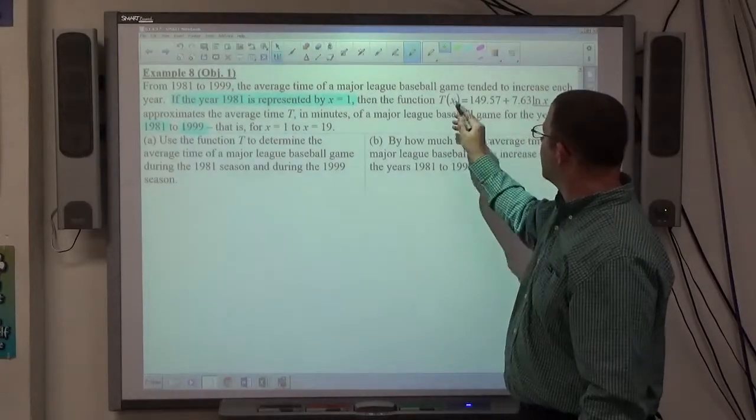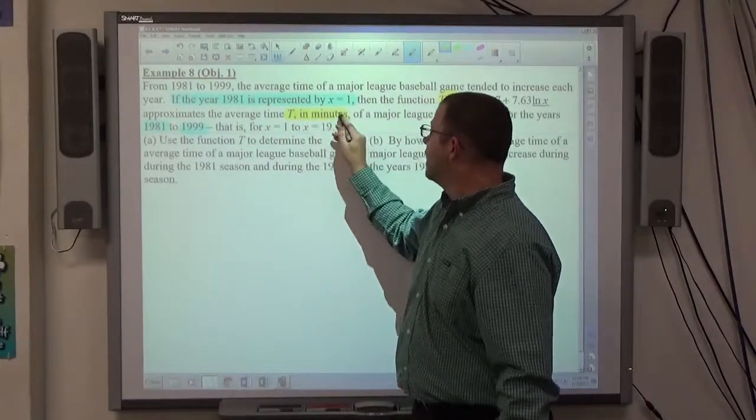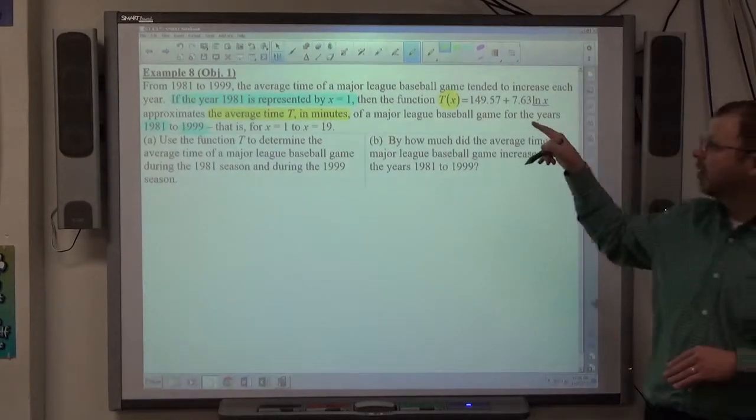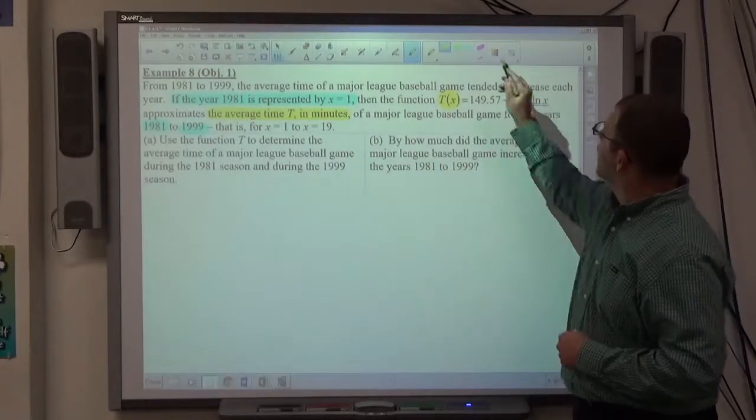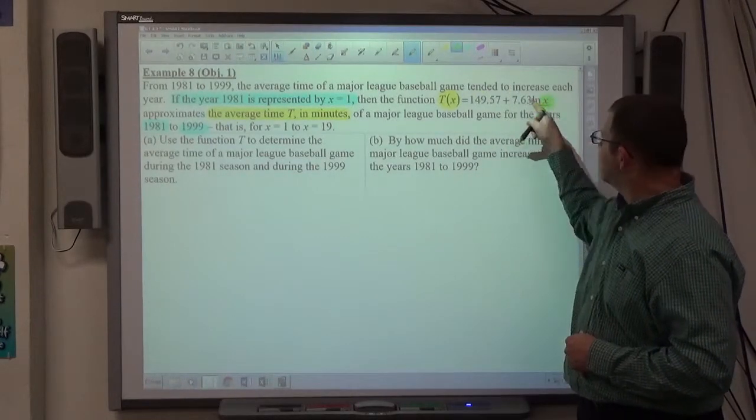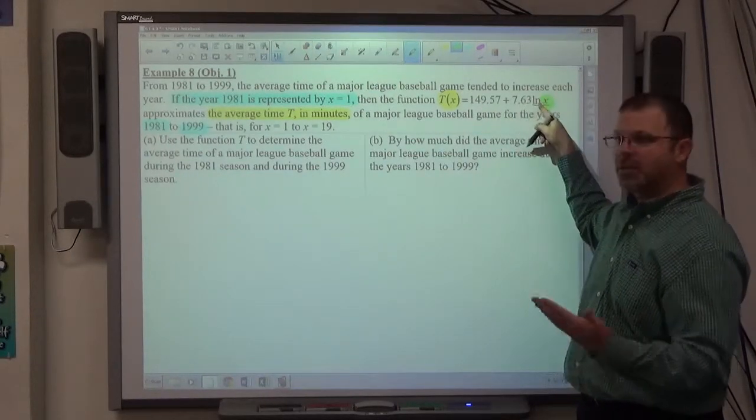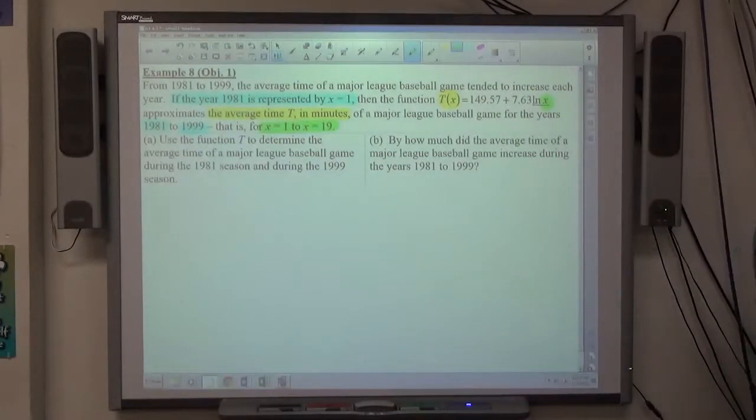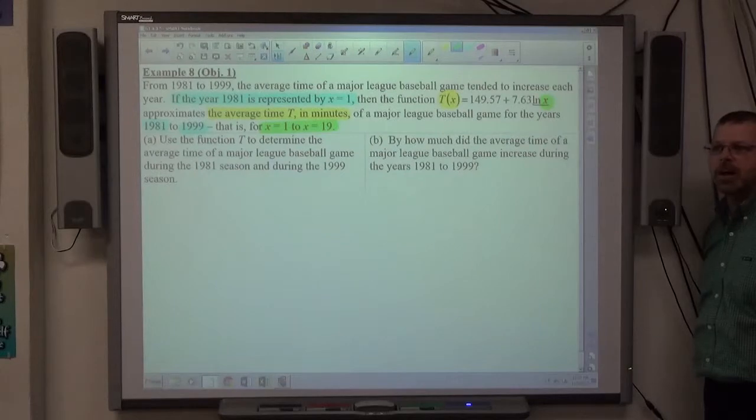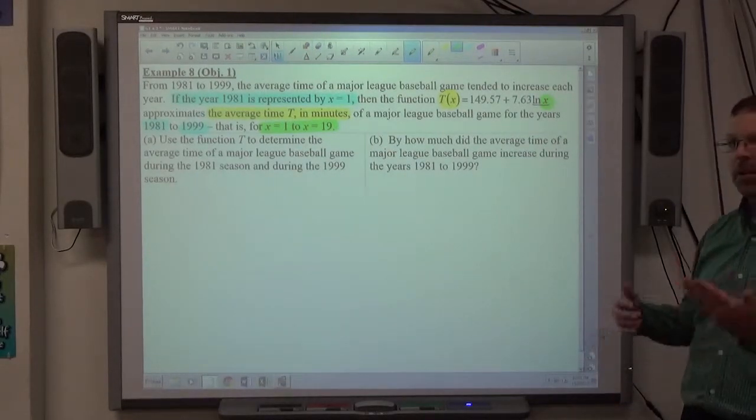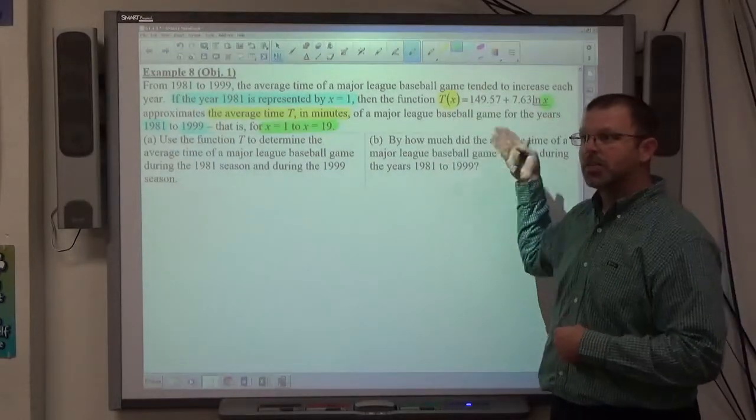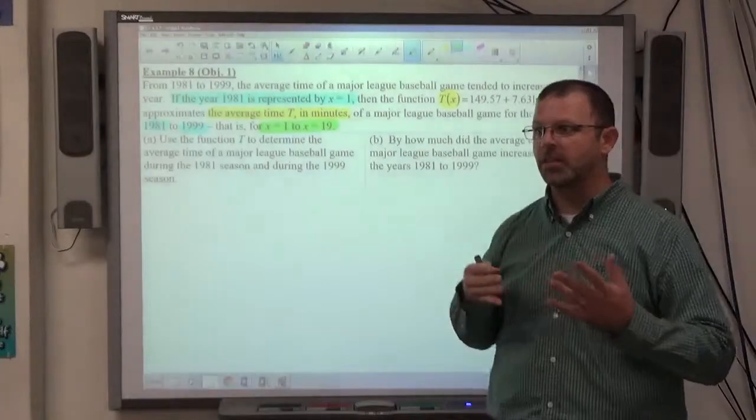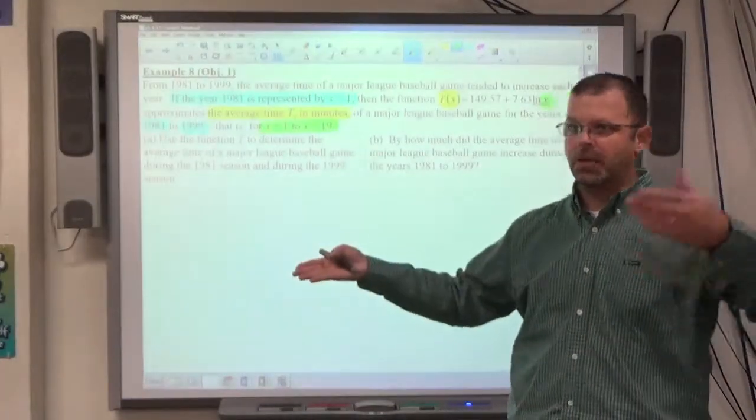The other thing we have to consider is the equation. We have t(x). t(x) is t. t is the average time of game in minutes. They're giving us an equation. We need to understand what these variables in the equation represent. The variable t(x), which is t, is the average time in minutes. It says ln x. 149.57 is a number, 7.63 is a number, ln is a log function, x is a variable. x is the year. And the year's domain is 1 to 19. So this function's only valid for years 1981 to 1999. If they're asking me for the time, they should give me the year. I substitute the year in based on what number that year is, and then that'll tell me what the time is.